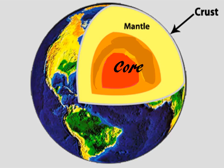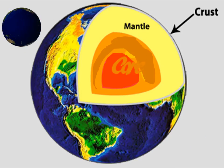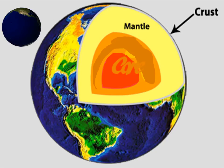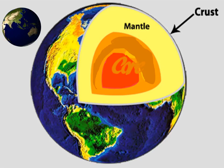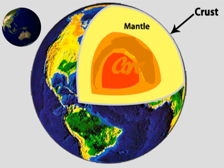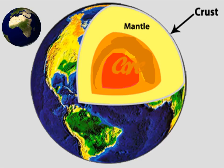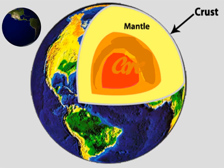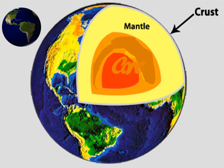The crust, the mantle and the core. Now let us learn about the first layer of the earth, that is the crust. The crust is the solid, outermost and the thinnest layer of the earth. The crust is made up of many kinds of rocks and the main elements of the crust are silica, aluminium and magnesium. The outer crust has valuable soils and provides us with most of the minerals.